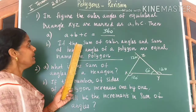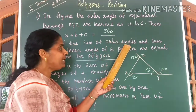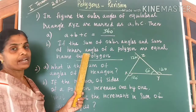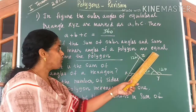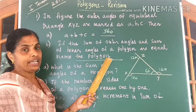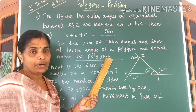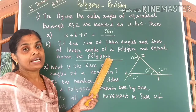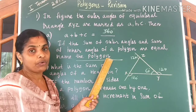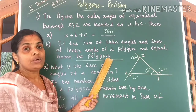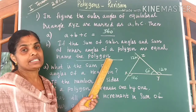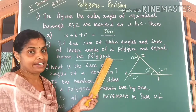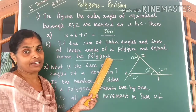Second question: if the sum of outer angles and sum of inner angles of a polygon are equal, name the polygon. The polygon is a square. A square is a regular polygon of 4 sides with interior angle sum 360 degrees and exterior angle sum also equal to 360 degrees.